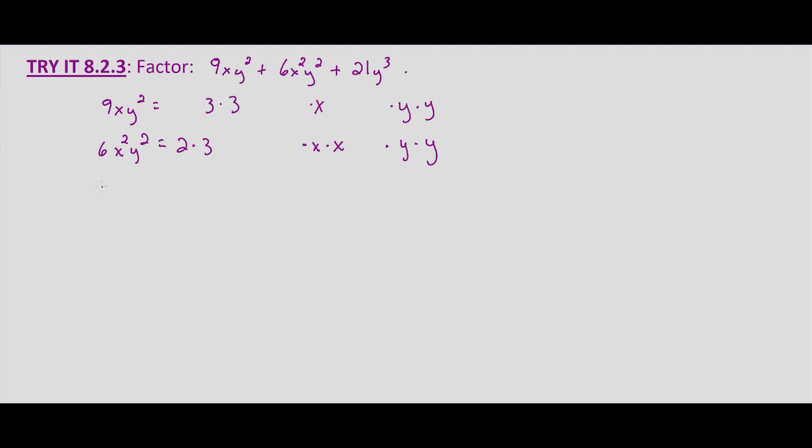And now we'll look at 21y³, and that equals 3 times 7. No x's and then 3 y's, times y times y times y.